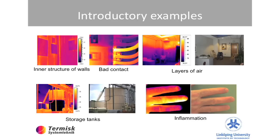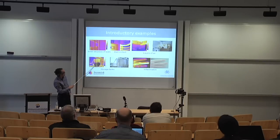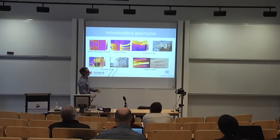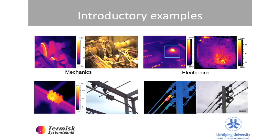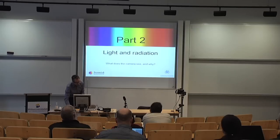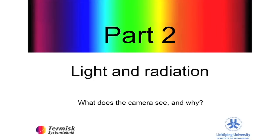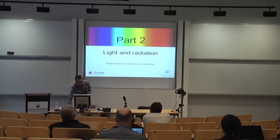There are layers of air that can vary in buildings due to strange ventilation. A storage tank shows how much is inside — this one appears about half full with something colder than the environment. One of these fingers has an inflammation. Mechanics and electronics go warm when they're not functioning well. Power transmission lines and electrical things go warm when something is bad. That's how we typically see them in brochures — with a camera like that. Now let's go back to light and radiation.